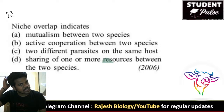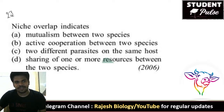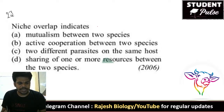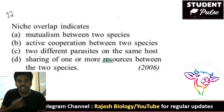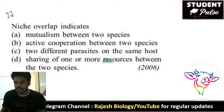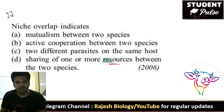Twenty-third question: niche overlap indicates — it is not parasites on the same host. Niche overlap means sharing of one or more resources between two species. When resources are shared between two species, their niches are automatically overlapped.